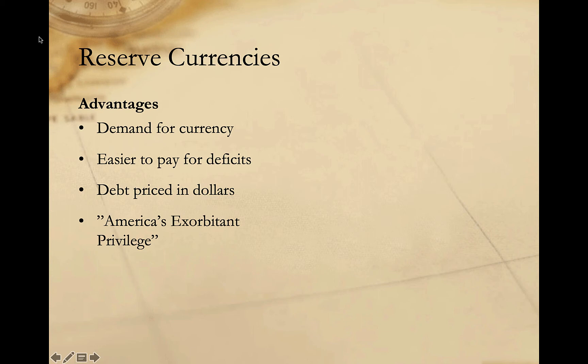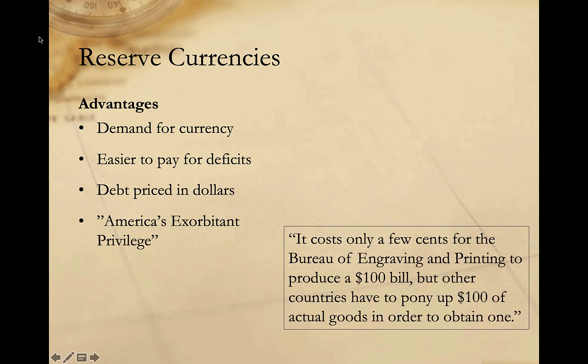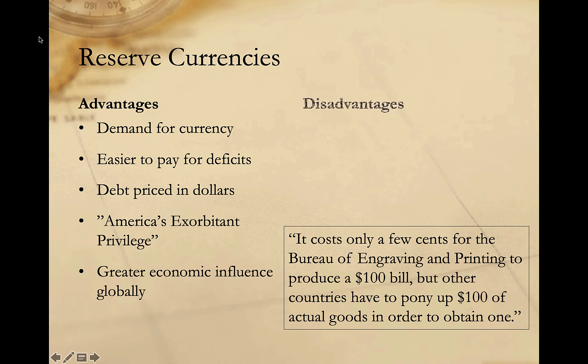As one American economist described it, it costs only a few cents for the Bureau of Engraving and Printing to produce a $100 bill, but other countries have to pony up $100 of actual goods and services in order to obtain one. This is not to suggest the United States could simply print more money at will — such a move would be highly inflationary and would undermine the position of the dollar as the global reserve currency. But it does highlight the advantage the US has in paying for goods, servicing its debt, and operating in the global economy. It certainly affords the United States greater influence and permits it to take advantage of a wider array of economic tools — for example, economic sanctions, since restrictions on access to dollars are easier for the US government to impose. However, there are also some costs or disadvantages.